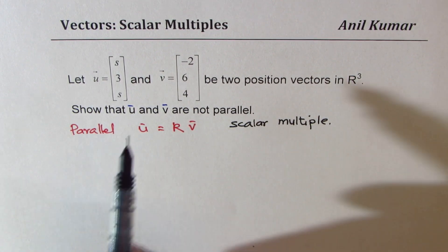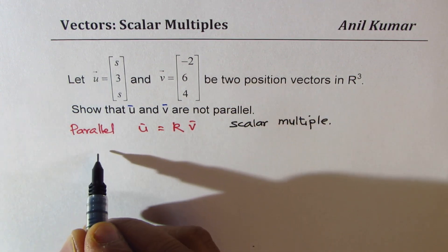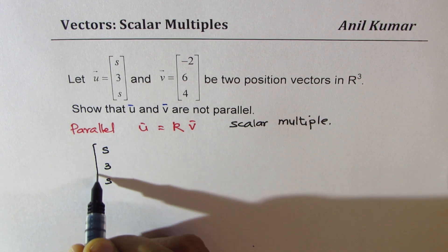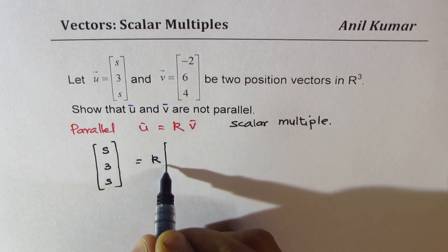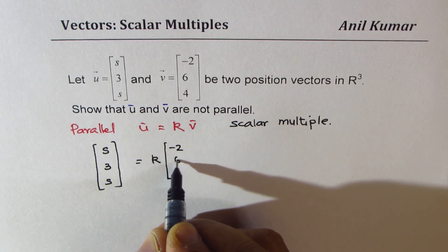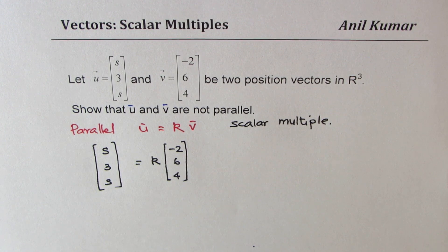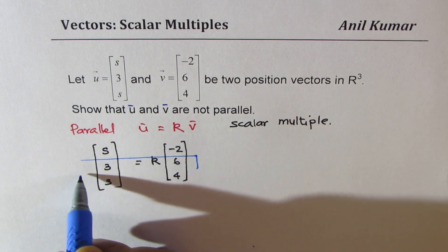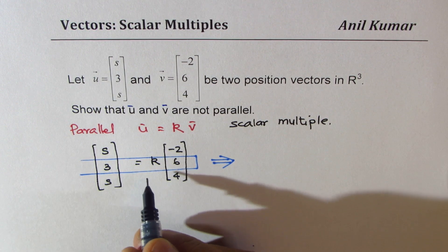Now let us say that u is k times v. So u is given to us as s, 3, s and if we write this as k times v which is minus 2, 6, 4.